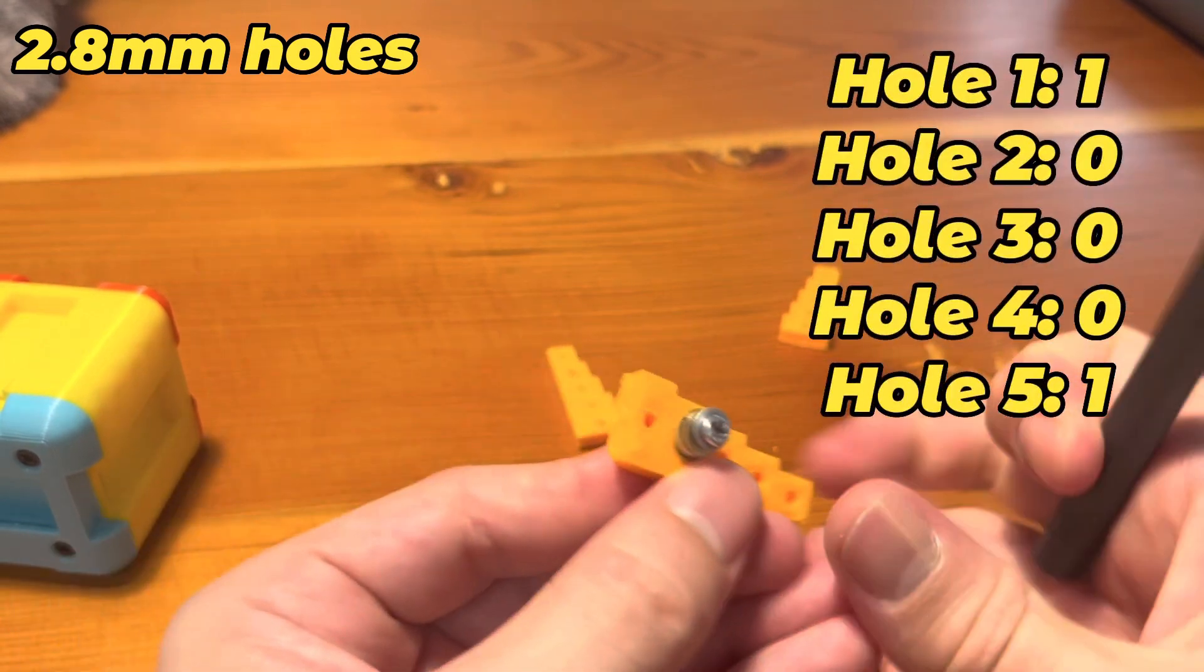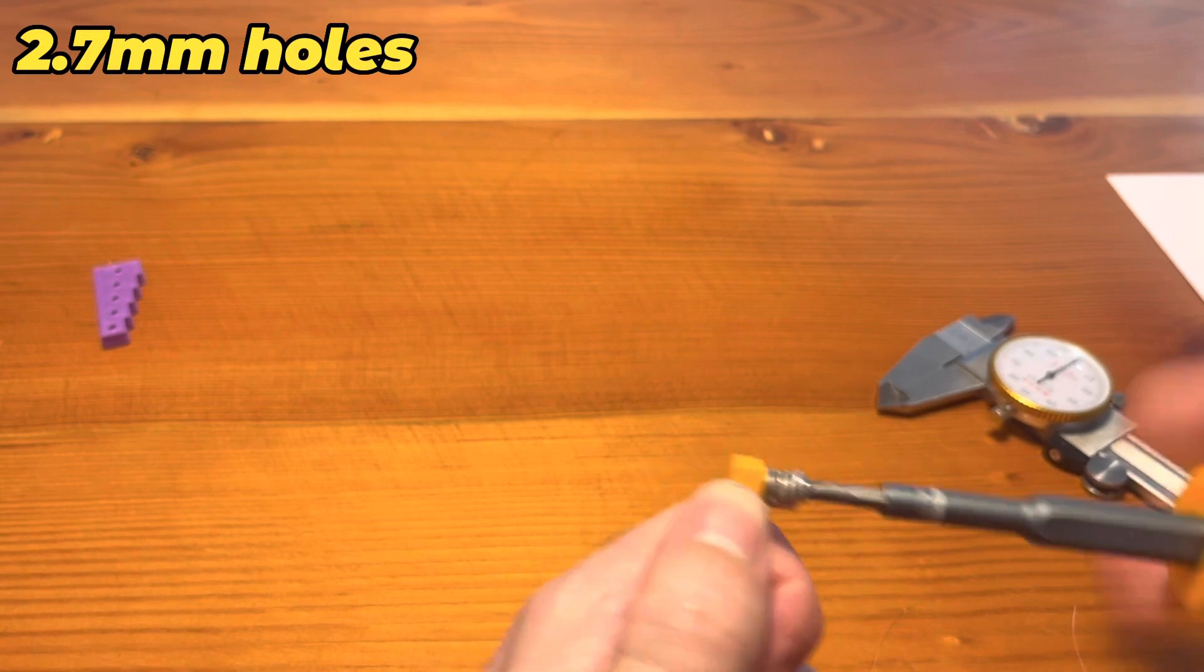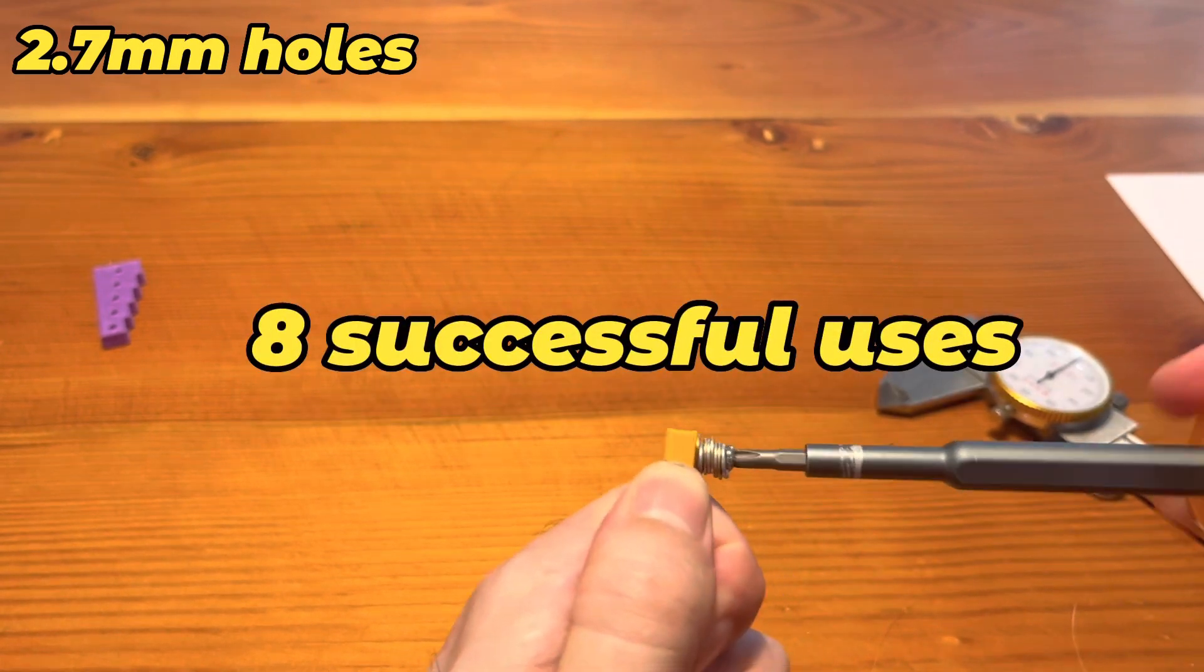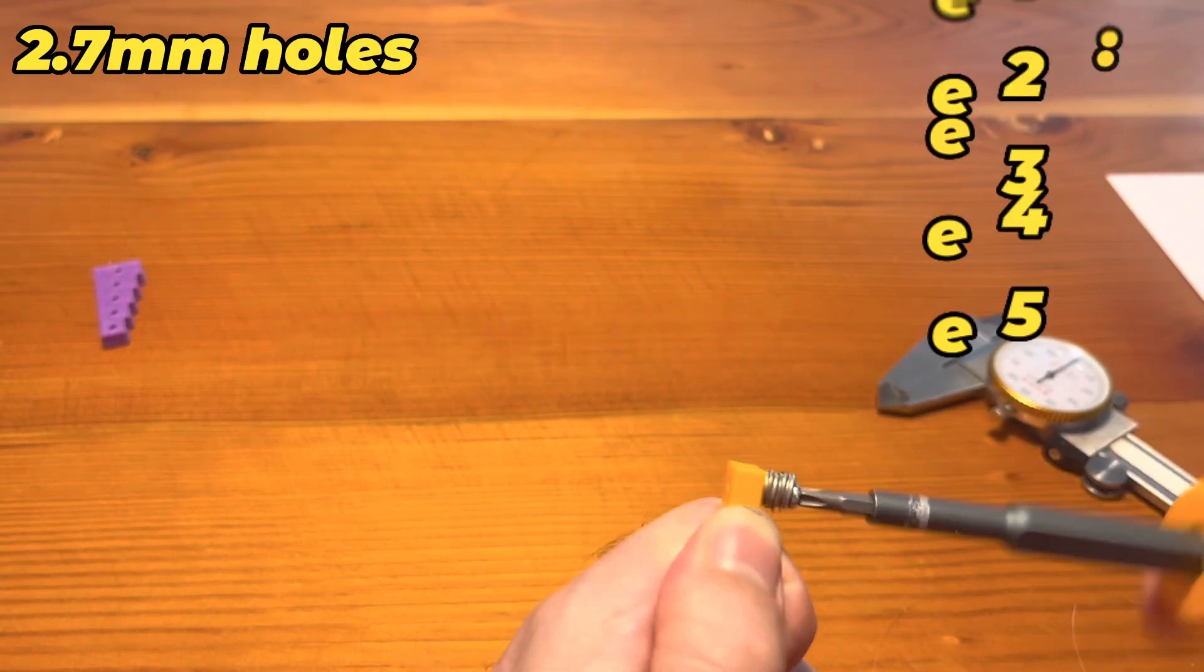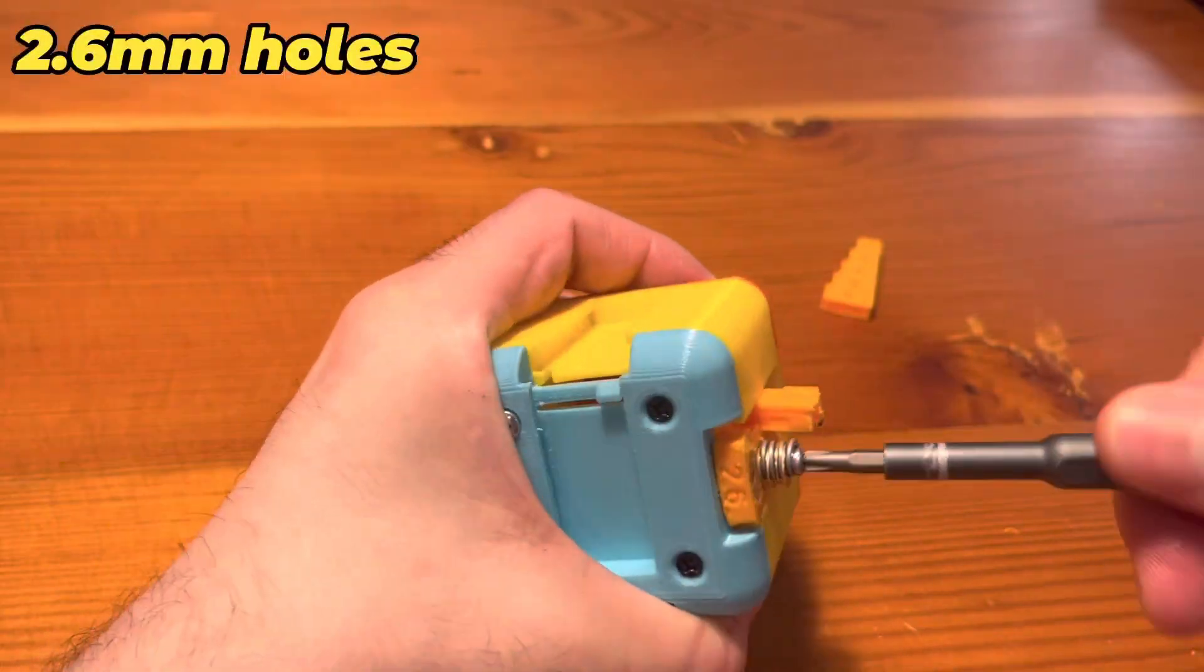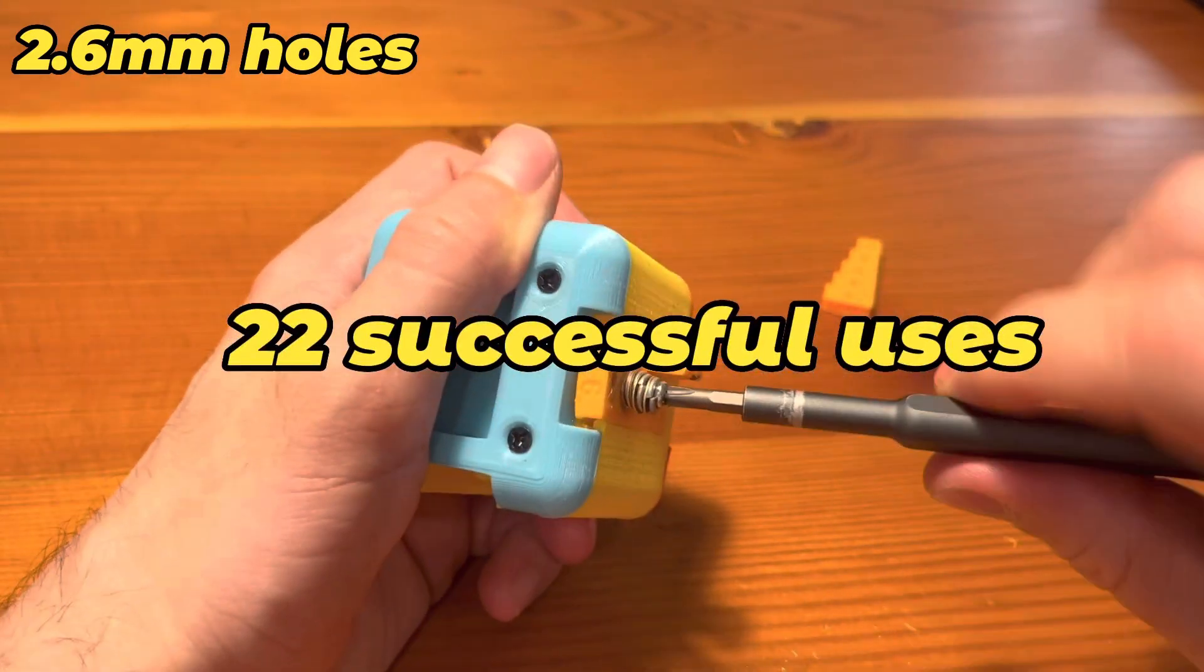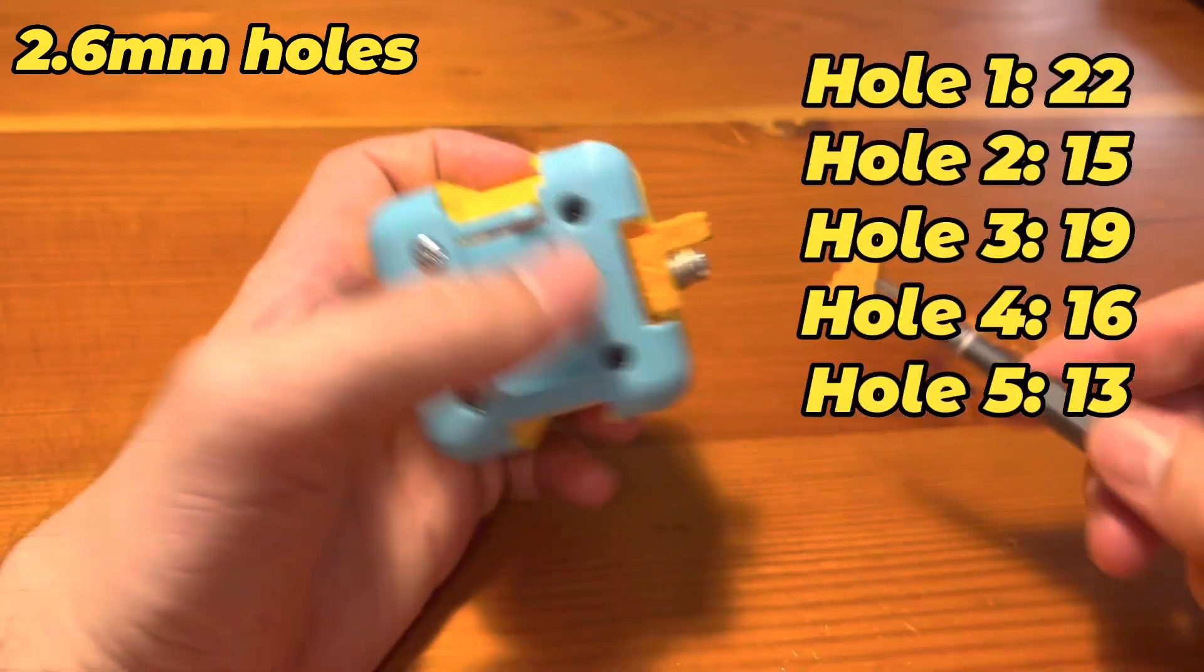If you're interested, here's the testing results for the other holes. Here's the 2.7 millimeter part. The first hole ended up getting eight successful uses. And here are the results for the rest of the holes. Now for the 2.6 millimeter part. On the first hole, we got 22 successful uses. And then on the rest of the holes, here are the results for those.